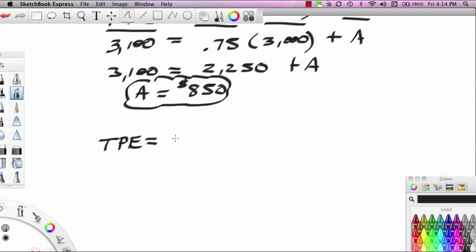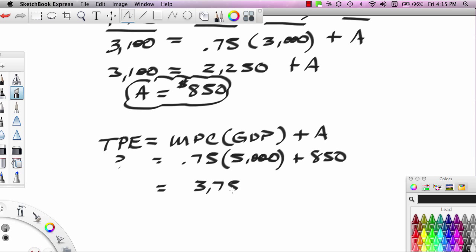TPE equals MPC times GDP plus A. We know this is 0.75. We know this is now 850. So if GDP is 5,000, the question becomes what is TPE? What is 75% of 5,000? That turns out to be 3,750 plus 850. And that equals 4,600. So TPE3, which we had drawn in red, is 4,600.